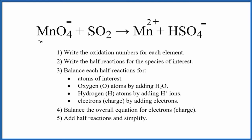Let's balance the redox reaction for MnO4 minus plus SO2 gives us Mn2 plus and HSO4 minus. The first thing we do when balancing these redox reactions is write the oxidation numbers for each element. That looks like this. If you need help with oxidation numbers, there's a link in the description and at the end of this video.